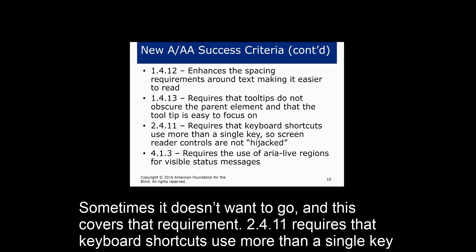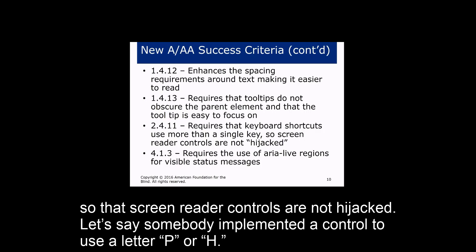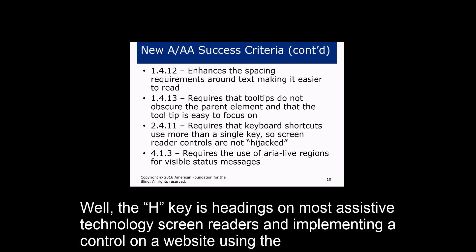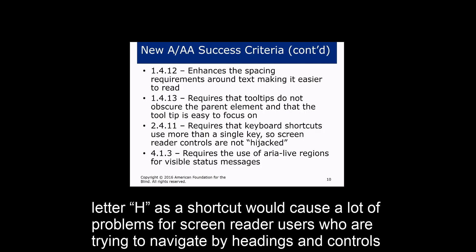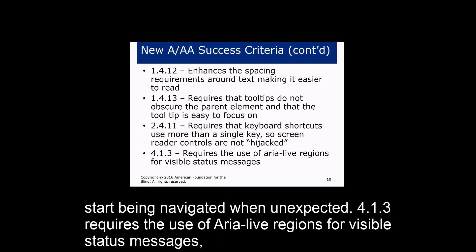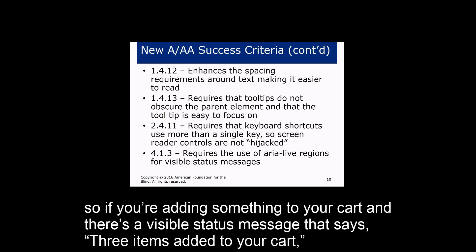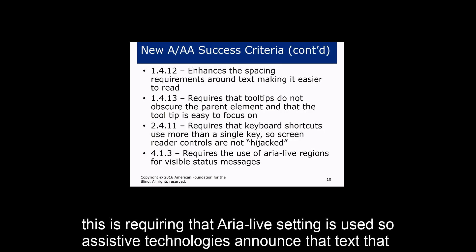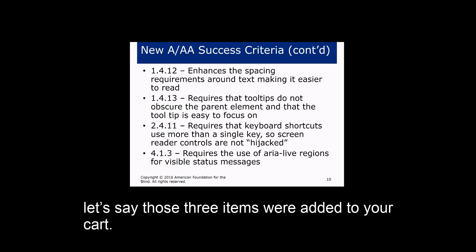Criterion 2.4.11 requires that keyboard shortcuts use more than a single key, so screen reader controls are not hijacked. For example, if someone implemented a shortcut using the letter H — which is the heading navigation key in most screen readers — that would cause major problems for screen reader users. Criterion 4.1.3 requires the use of ARIA live regions for visible status messages. So if you add something to a cart and there's a visible status message saying 'three items added to your cart,' an ARIA live setting is required so assistive technologies announce that text.